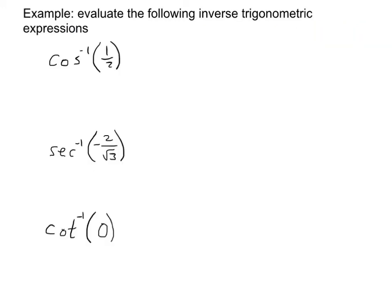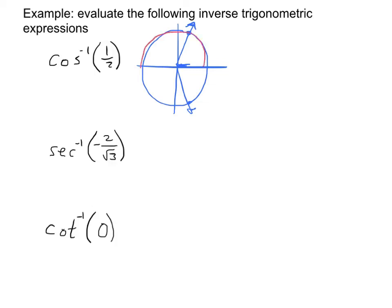Here are three more examples — pause the video and work through them. The inverse cosine of 1/2 means I'm looking for an angle whose x-component is positive 1/2 — a sideways value. That's going to be in the first or fourth quadrants, but principal values for cosine happen in the first and second quadrants — across the top. So the angle we find there is π/3.